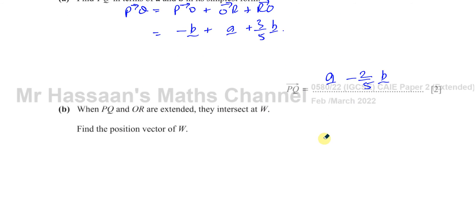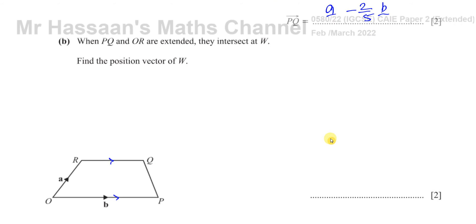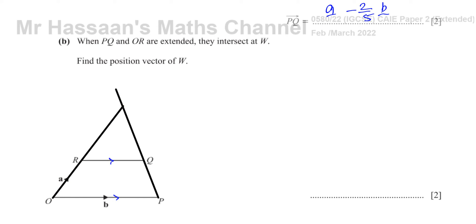Part (b) says: when PQ and OR are extended, they intersect at W. So when PQ is extended and OR is extended, they meet at the point W. Find the position vector of W.